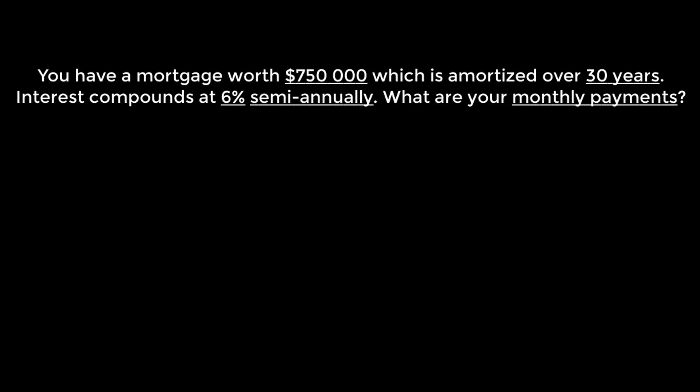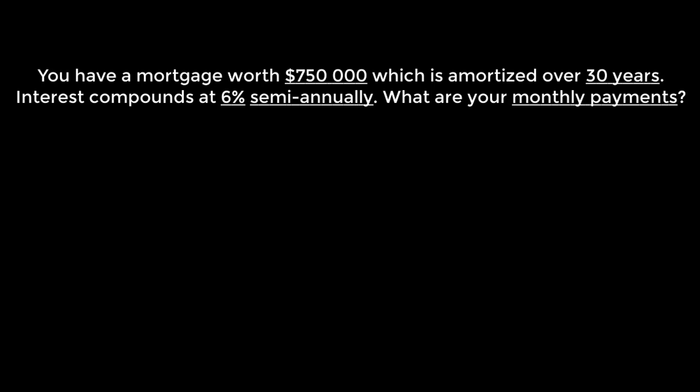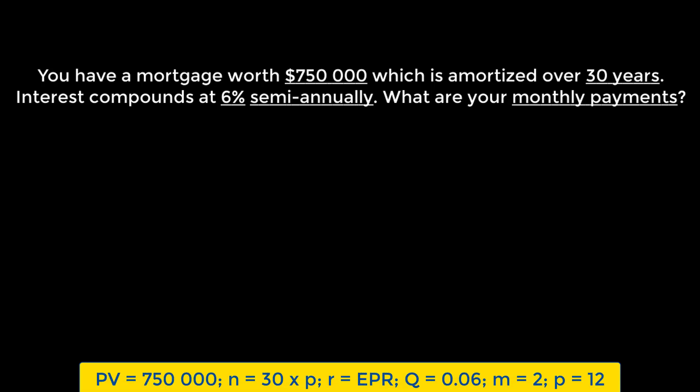Suppose we have a mortgage of $750,000 which is amortized, as mortgages usually are, over 30 years, and interest compounds at 6% semi-annually. What are the monthly payments? First things first, we know that the interest rate we've got here is an APR, and we can't use it in our calculation to find the payment amount. We need EPR for that. So let's convert from APR to EPR directly using this formula.